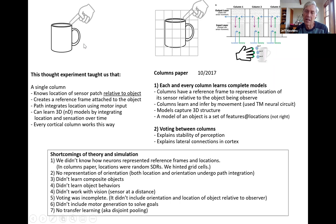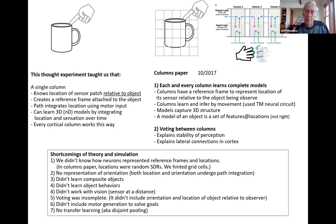Every column in the cortex has cells that generate behaviors — they're in layer five, and every column has them as far as we know. So it's not that these are just inference engines; these are inference and motor generation engines. The columns create speech, make fingers move, make eyes move. We just talked about how a column could use sensory and movement data to learn and infer objects, but not to achieve any goals — why would a column generate motor behavior, and how does it do it? That's what I meant.